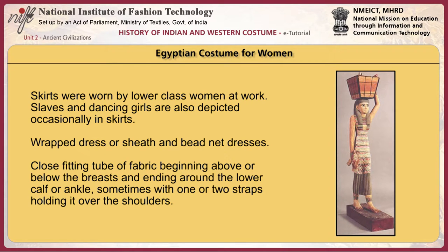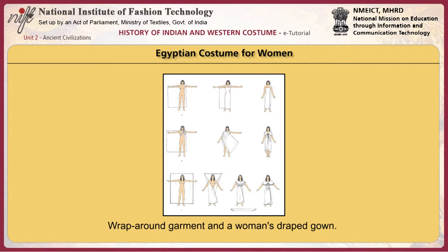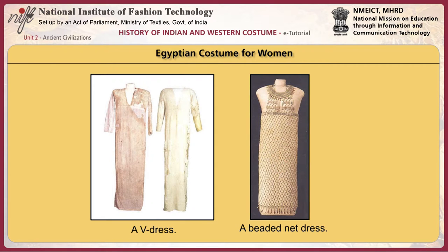Skirts were worn by lower class women at work. Slaves and dancing girls are also depicted occasionally in skirts. Wrapped dress or sheath and bead net dresses — close-fitting tubes of fabric beginning above or below the breast and ending around the lower calf or ankle, sometimes with one or two straps over the shoulders — were common. Pleated and draped wrapped long dresses were the most complex garments worn by Egyptian women. Tunics, v-neck dresses, shawls and cloaks of similar styles were worn. Sashes were used to hold clothing in place.